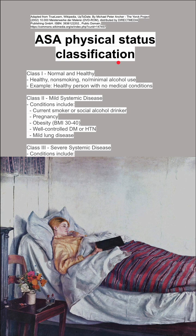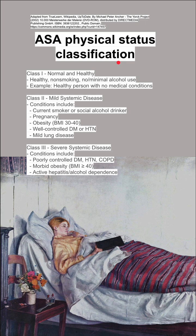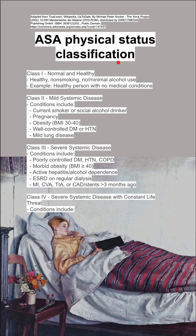Class 3 is severe systemic disease. Some conditions include poorly controlled diabetes, hypertension, or COPD, morbid obesity with a BMI over 40, active hepatitis or alcohol dependence, end-stage renal disease on regular dialysis, or myocardial infarctions, strokes, TIAs, or stents from three months ago.